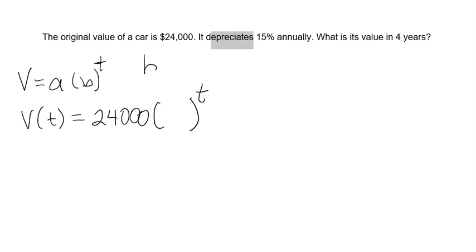To get the base, we have to add or subtract the rate from one. We know that multiplying by one wouldn't change the value of the car. Multiplying by a number greater than one would grow the value of the car. Multiplying by a number less than one would decrease the value of the car.